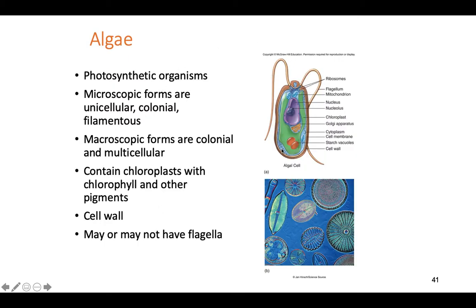Algae are photosynthetic. Microscopic forms are mostly found in the environment; they also come in colonial, filamentous, and macroscopic forms that are multicellular and quite large — like seaweed and kelp. A stereotypical algal cell like Chlamydomonas contains chloroplasts and chlorophyll, making it green. These guys photosynthesize, converting sunlight energy into chemical energy to power their cells. They have cell walls made of cellulose, or peptidoglycan if they're cyanobacteria. They may or may not have flagella depending on the species.